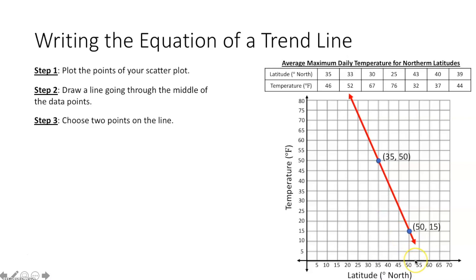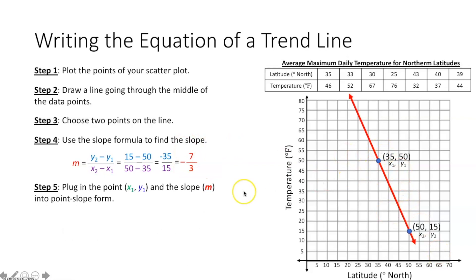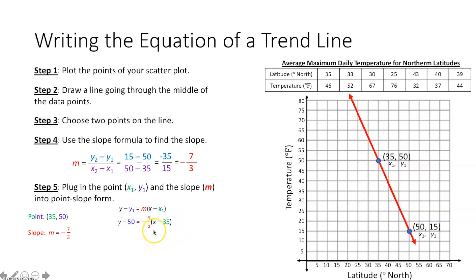From those two points, figure out the slope using the slope formula: m = (y₂ - y₁) / (x₂ - x₁). Pick one point to be (x₁, y₁) and the other to be (x₂, y₂) — it doesn't matter which is which. Plug each into the slope formula, simplify, and you get a slope of negative 7 over 3. Now create the equation of the line using a point and that slope.